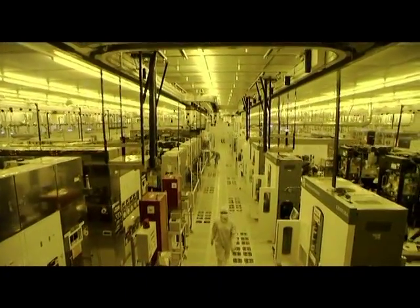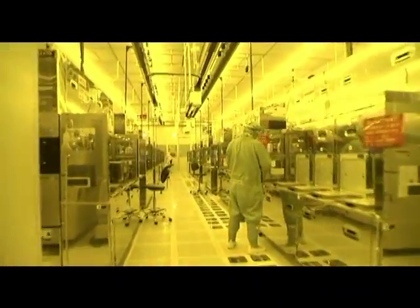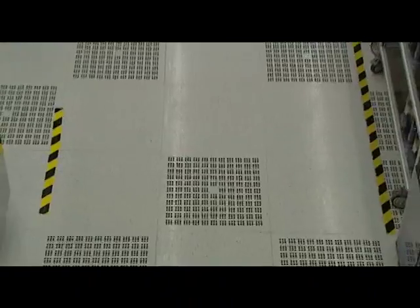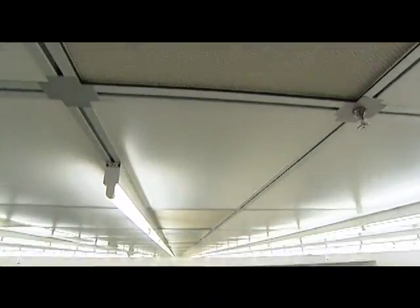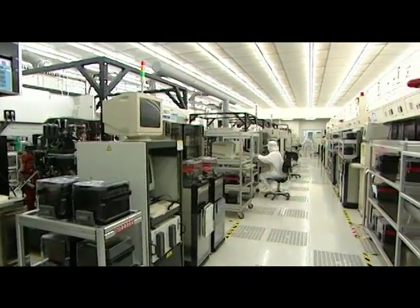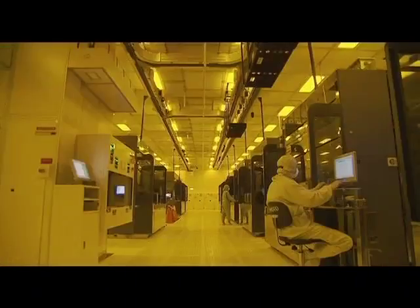The FAB is a giant cleanroom equipped with many types of air filters to keep the manufacturing environment free from contamination. Air from the outside must pass through many types of filters to eliminate all kinds of particles in order to maintain air quality of the cleanroom.